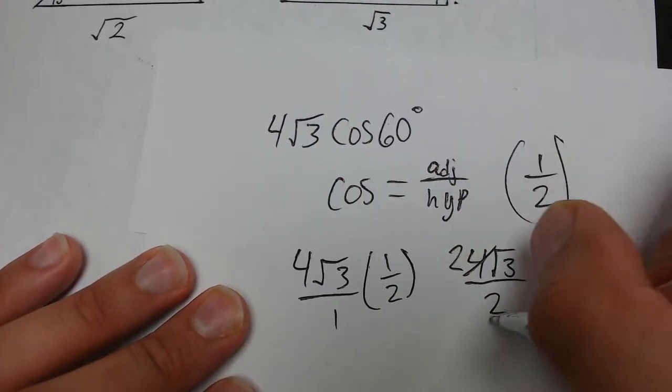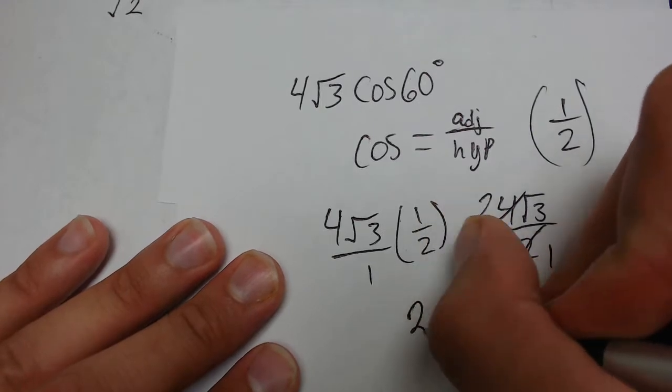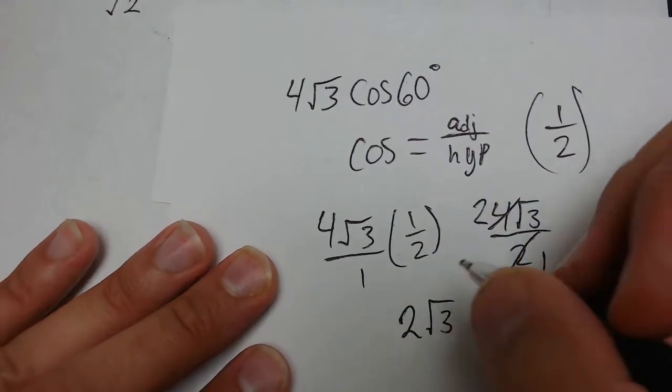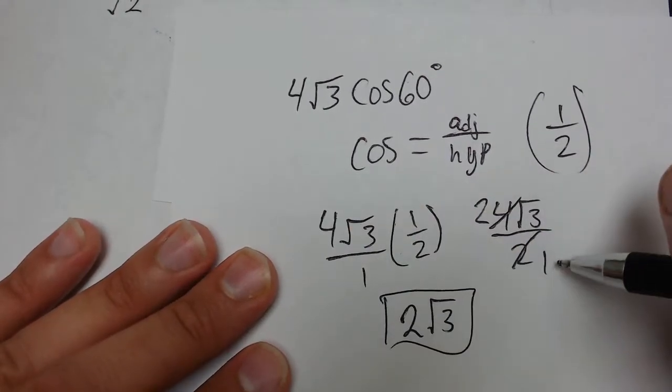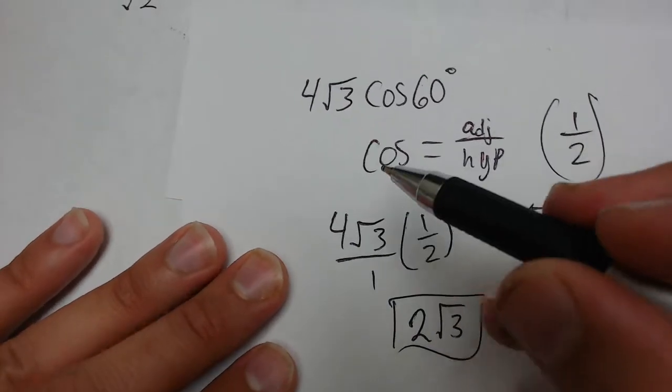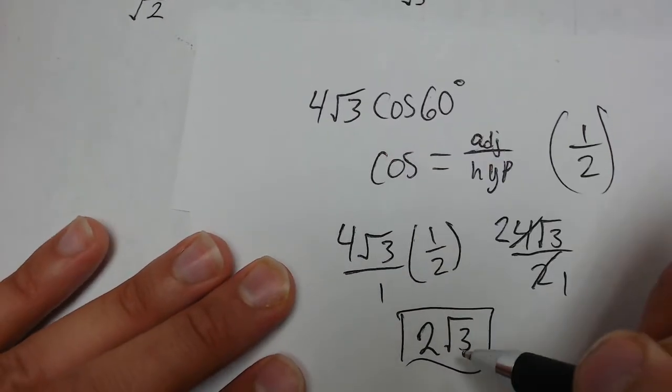And then we can cancel the 4 and the 2. 4 becomes 2, 2 becomes 1. So our final answer becomes 2 root 3, because my denominator is 1, so I don't need to put that in there. So 4 root 3 times cosine of 60 gives us 2 root 3.